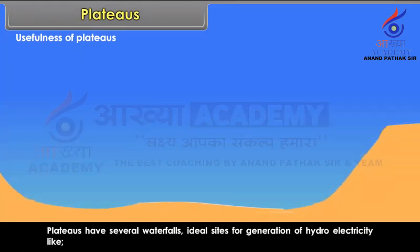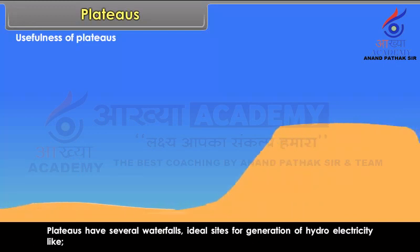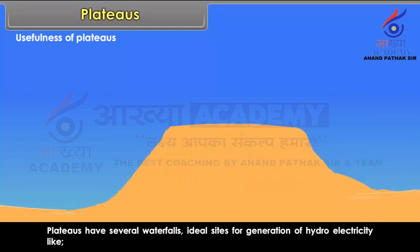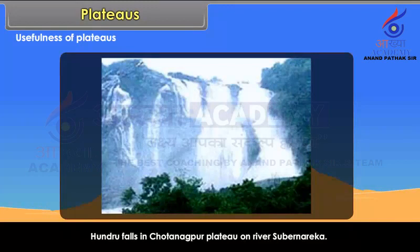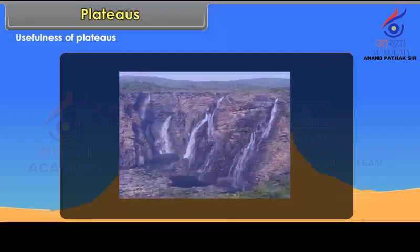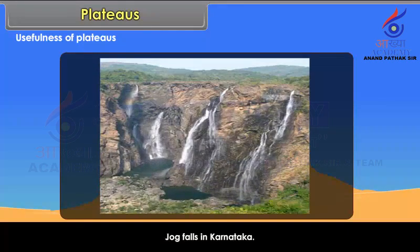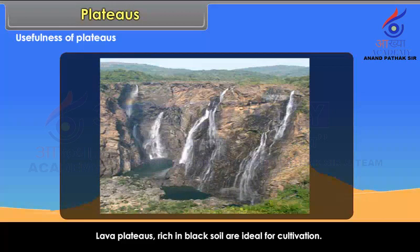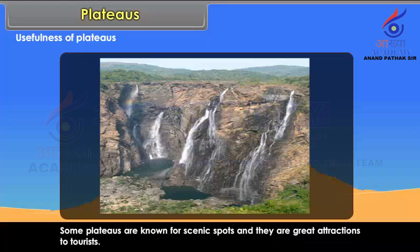Plateaus have several waterfalls, making them ideal sites for generation of hydroelectricity, like Kunru Falls in Chota Nagpur Plateau on River Subarnarekha. Lava plateaus rich in black soil are ideal for cultivation. Some plateaus are known for scenic spots and are great attractions to tourists.